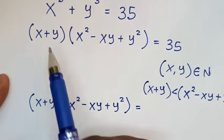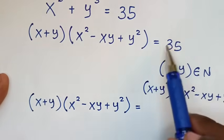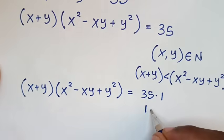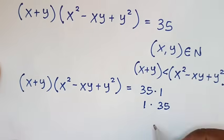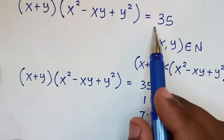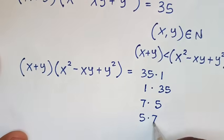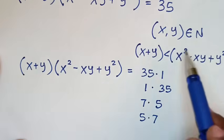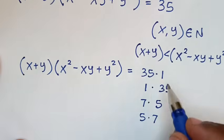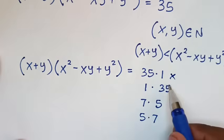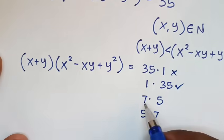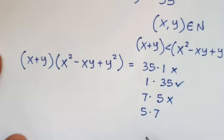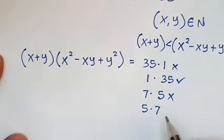We have choices. From x plus y times x squared minus xy plus y squared equal to 35, to get 35 it is either 35 times 1 — first selection — or 1 times 35 — second — or 7 times 5, which is 35, or 5 times 7, which is 35. Since the first number must be less than the second, 35 times 1 is not okay, 1 times 35 is okay, 7 times 5 is not okay, 5 times 7 is okay.